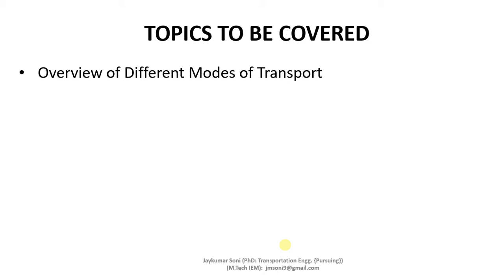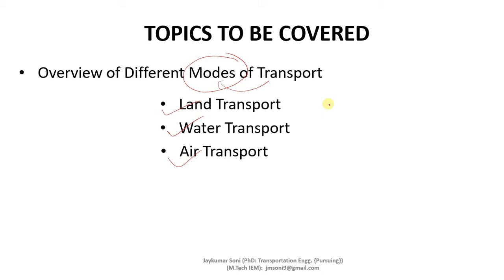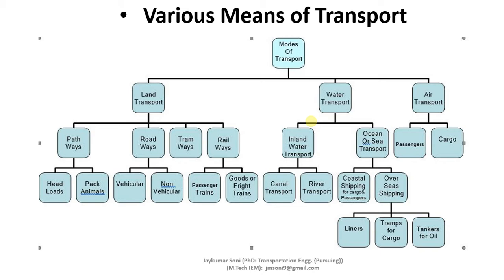In this lecture we are going to cover the overview of different modes of transport, and how transportation activities can be conducted. We will be learning about land transport, water transport, and air transport — their types and how they are used. In general, the modes of transport can be divided into 3 categories: land transport, water transport, and air transport.